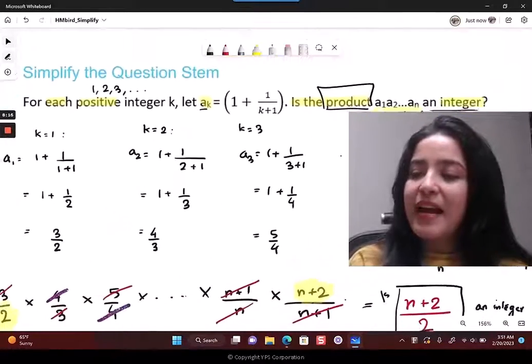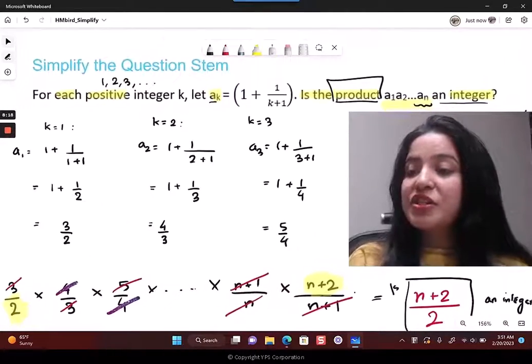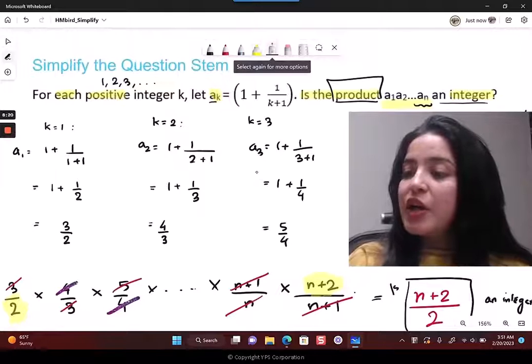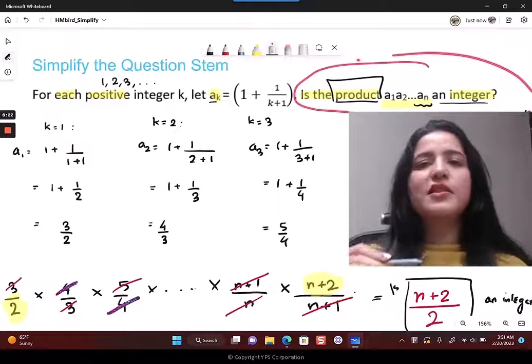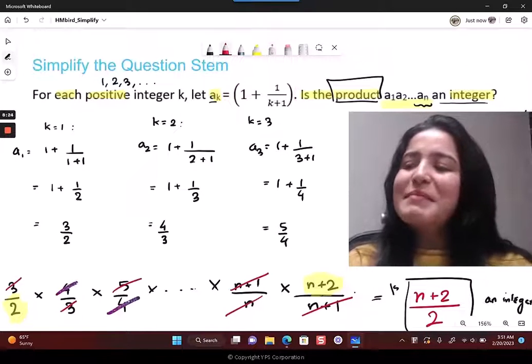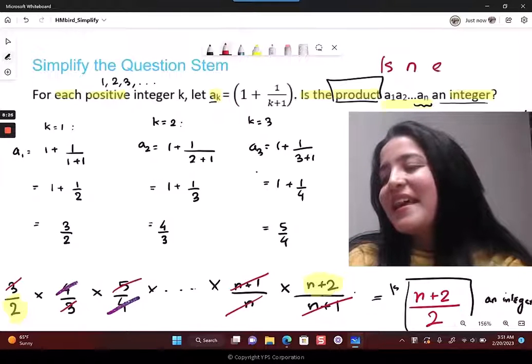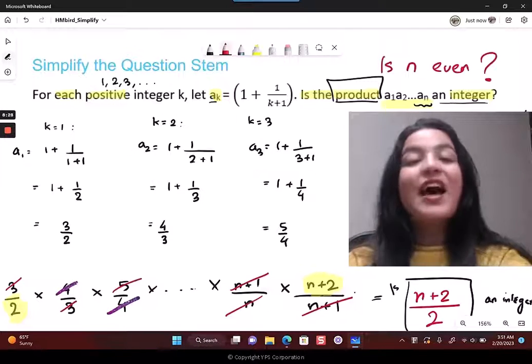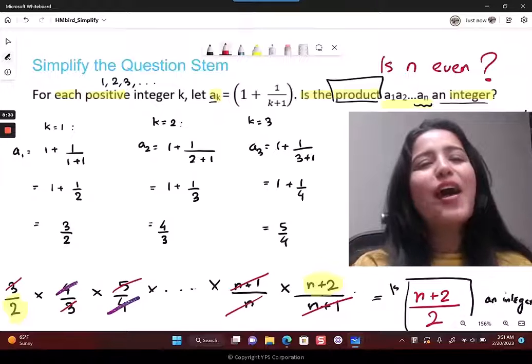This is the final simplified version of the complicated question stem that you saw. This is the original question stem - is the product an integer? But what has it become now? Is n even?